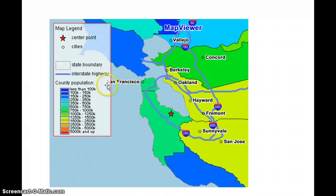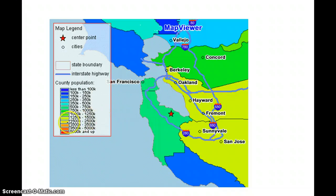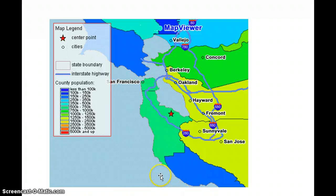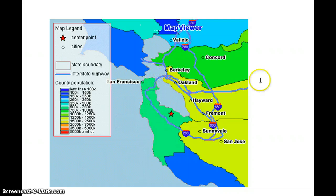It also shows county population. This is determined by different colors. We can see that the yellow counties have a higher population, the blue counties have a lower population, and the green counties have a mid-range population.